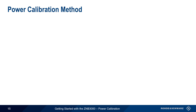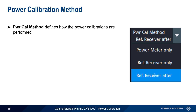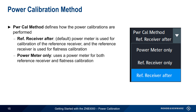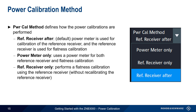The last step is choosing the power calibration method. The default method is Reference Receiver After, which means a power meter is used for the initial calibration of the reference receiver, and flatness calibration is done using the now-calibrated reference receiver. Alternatively, Power Meter Only uses the power meter for both the calibration of the reference receiver and the flatness calibration. A third but less common option is Reference Receiver Only, which performs flatness calibration using the reference receiver but does not first recalibrate it.